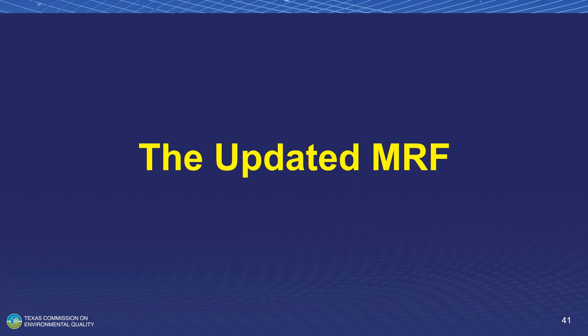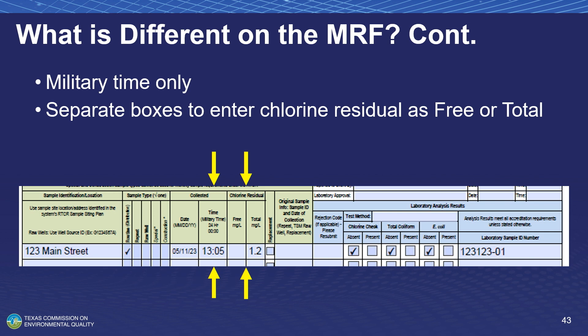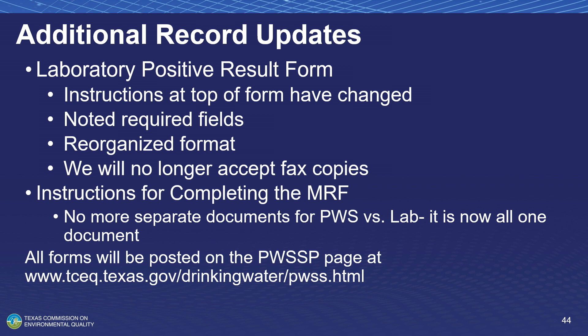Going over a few of the modifications recently made to the microbial reporting form: the chain of custody section has been moved to the bottom — it used to be at the top right — giving more room to write full names legibly. There is also the option to digitally enter information into MRFs. We will be moving to exclusively military time, as well as splitting up the free and total residual boxes to avoid having to circle the 'f' or 't' — making it clearer and less error prone. We're also updating the laboratory positive reporting form and the instructions for completing the MRF. You can see all of these forms on the PWSSP webpage.